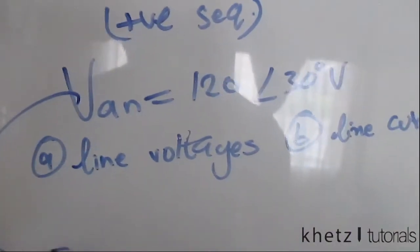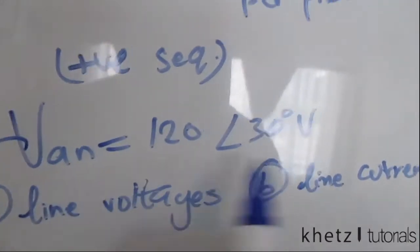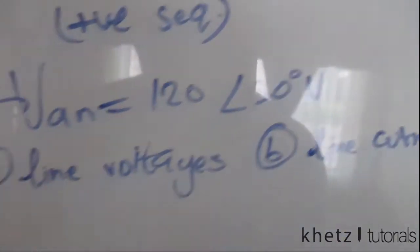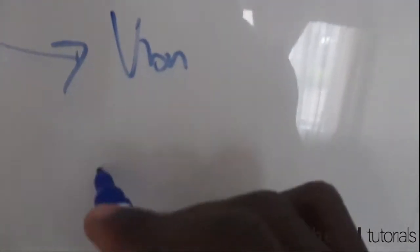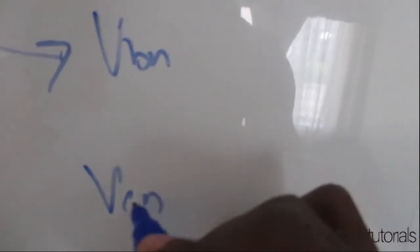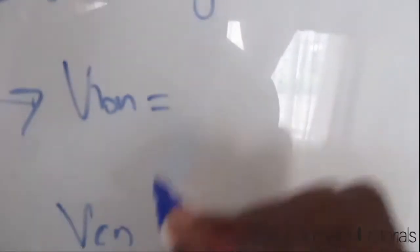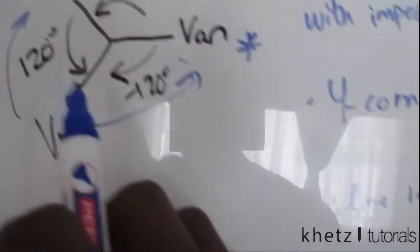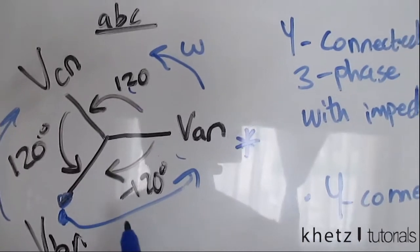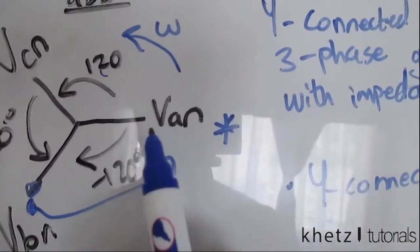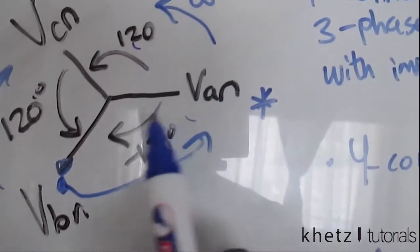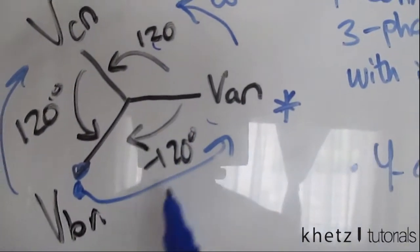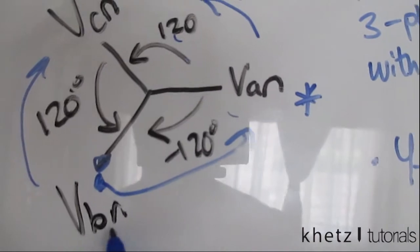Given V_AN, we can find V_BN and V_CN. Following the positive sequence — and this is indeed a positive sequence — given V_AN we subtract 120 degrees to find V_BN.